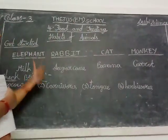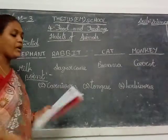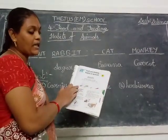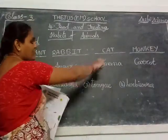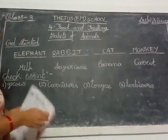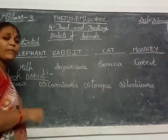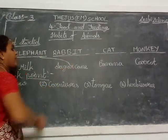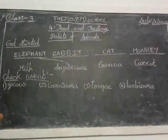So these animals — which food do they eat? Here pictures are given: milk, sugar cane, banana and carrot. First, elephant. Elephant, which type of food does it eat, children? Sugar cane. So you match sugar cane to the elephant — elephant with sugar cane.